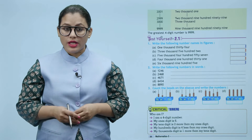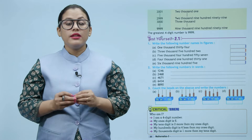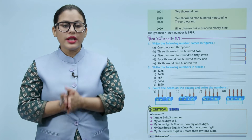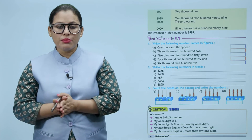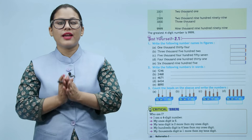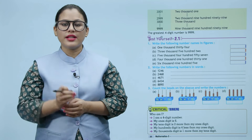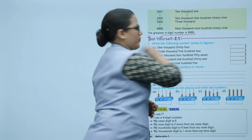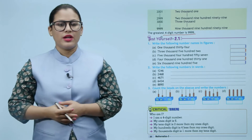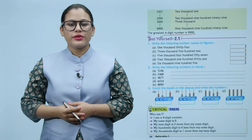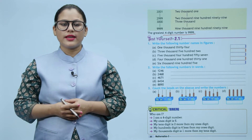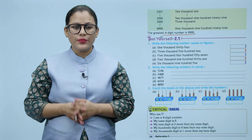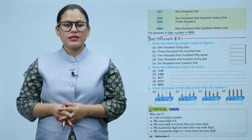Three thousand... nine thousand nine hundred ninety-nine. The greatest four digit number is nine thousand nine hundred ninety-nine. Okay children, niche aiko exercise dee gai hai, is ki practice aap khud se karengi.